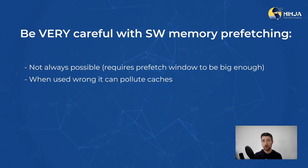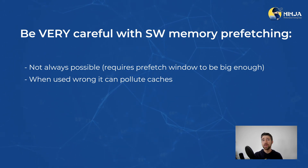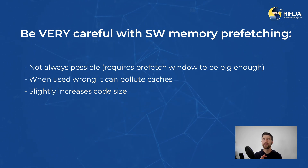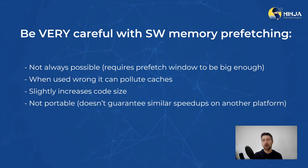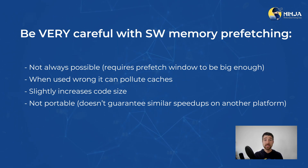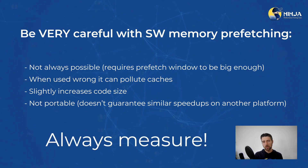Second, when used wrong, it may interfere with other data that's already in the cache — you may evict some important data from the cache. Third, the prefetch hint is an assembly instruction, so it slightly increases the code size. And fourth, the benefits of explicit memory prefetching are not portable. What I mean by that is that if you see a performance improvement on your platform, it doesn't mean you will see the same improvement on another platform. So always measure on all the platforms that you care about.